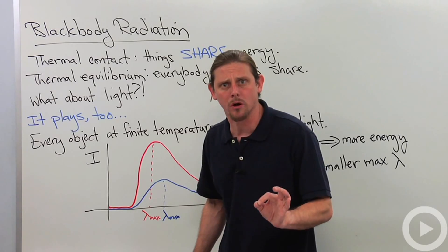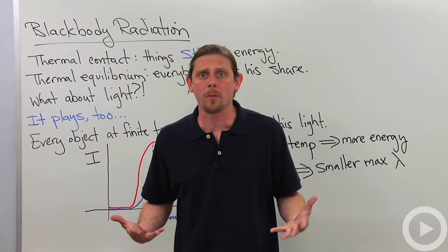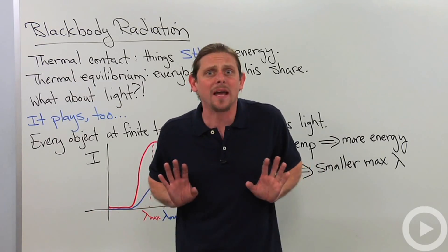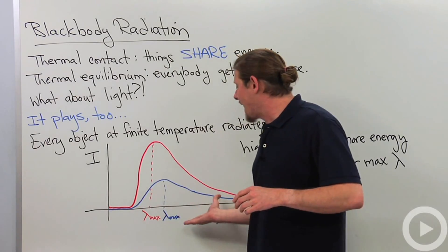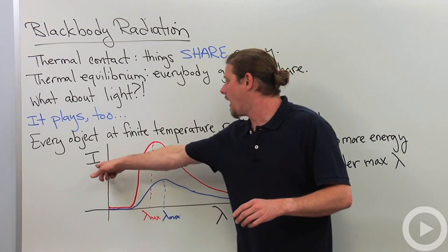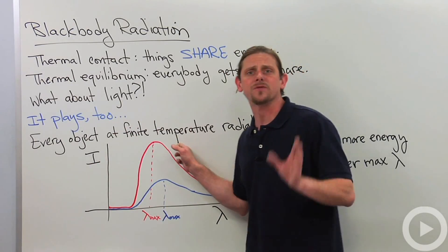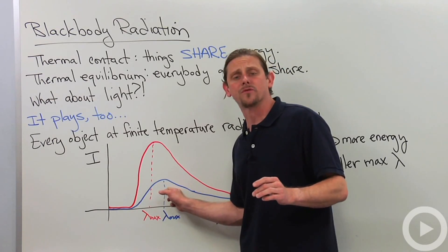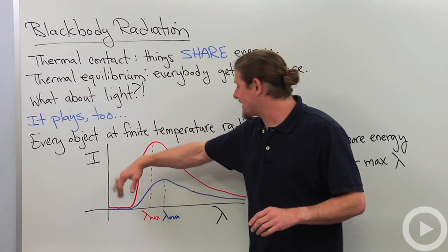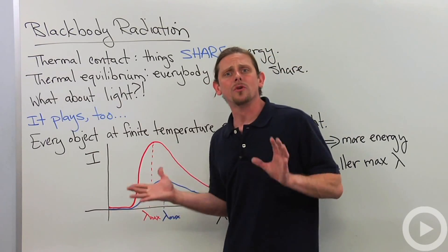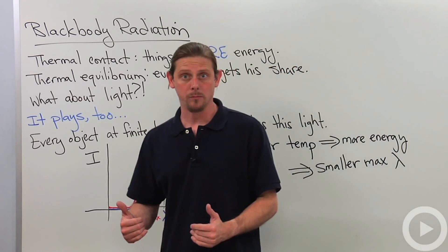Every object that has a finite temperature is always radiating energy, and this energy just comes from the thermal equilibrium. It comes from the temperature itself. So it's just radiating. I'm radiating energy right now, light energy. So when we go ahead and measure the intensity of the light that's coming off versus the wavelength, we get these real interesting curves. The red curve is for a hot object. The blue curve is for a cooler object. Notice that the red curve has a lot more energy, a lot more intensity.